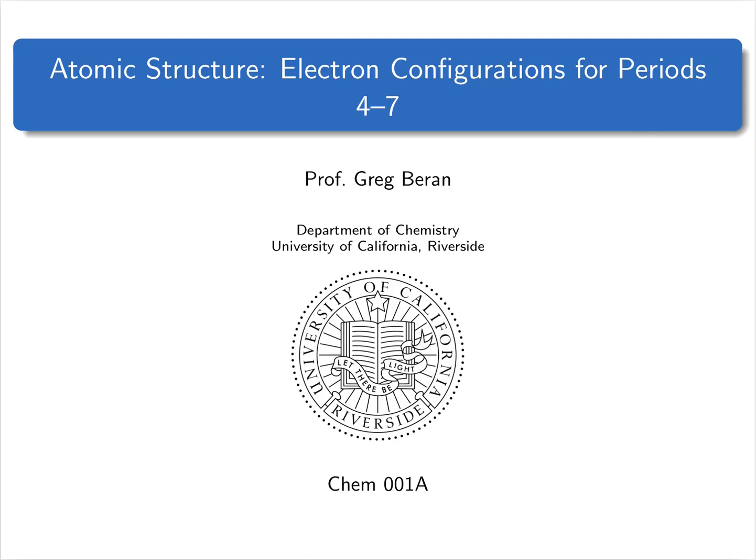In the last lecture, we talked about the electron configurations for the elements hydrogen through argon, which comprise the first three periods of the periodic table. Now we're going to discuss the electron configurations for the rest of the periodic table, that is periods four through seven.